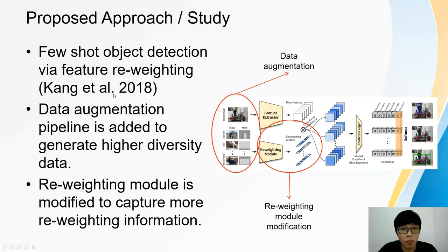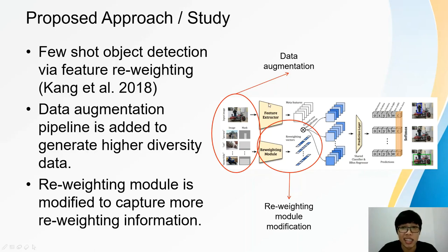The proposed study is based on the few-shot object detector via feature reweighting framework. The framework has a light network known as the reweighting modules for class-specific reweighting coefficients, to read the features from the feature extractor to detect objects. The enhancements are done by adding a data augmentation pipeline for input to generate high-diversity data and also modifying the existing reweighting modules to capture more reweighting information.